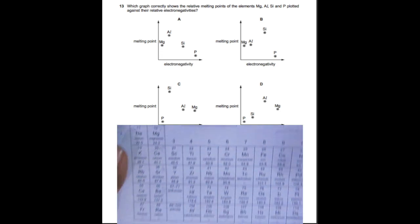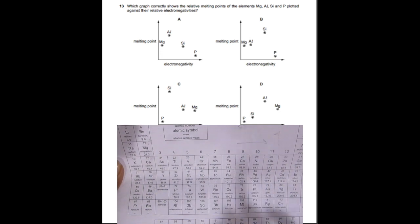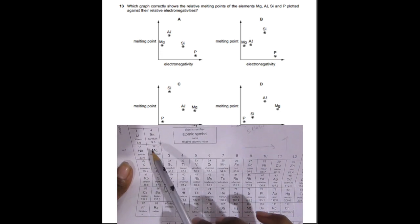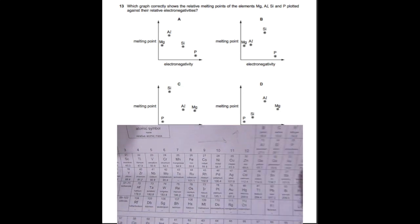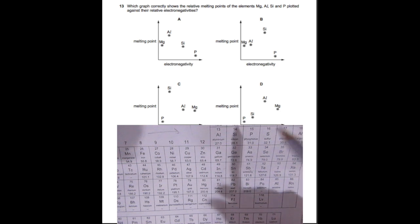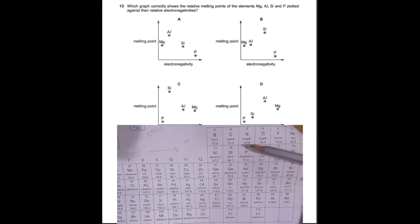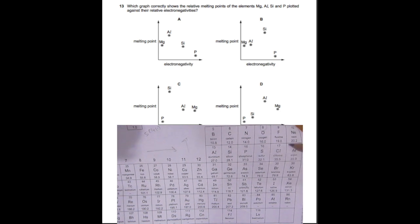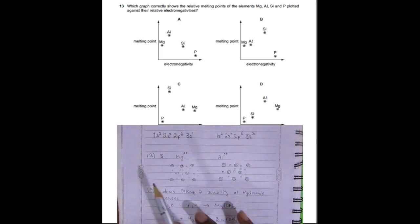Question 13: Which one has the correct melting points of each element? From sodium to magnesium melting point increases, magnesium to aluminum increases, aluminum to silicon increases, with silicon having the greatest melting point. Phosphorus is a gas, so it has a low melting point. The graph that shows this is B.